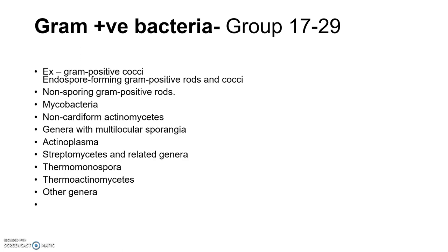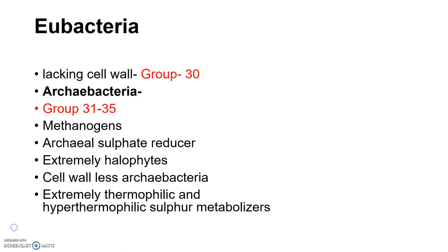Non-spore-forming gram-positive rods include mycobacteria, nocardioform actinomycetes, actinomycetes with multilocular sporangia, actinoplanes, streptomyces, thermomonospora, thermoactinomycetes, and other genera. This covers the gram-positive bacteria division.